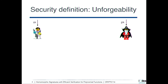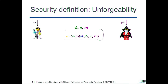That's the syntax of a homomorphic signature. What is the security property we consider? This is modeled as a game for unforgeability — a game between an adversary and a challenger. The adversary gets the public key and is allowed, as usual, to make signing queries on messages and labels of its choice. At the end, it has to come up with a forgery.